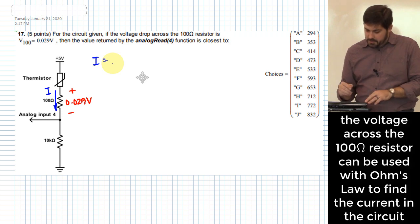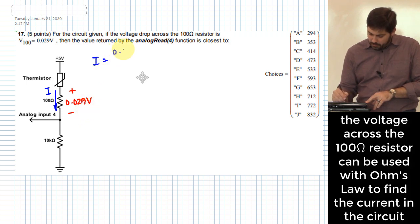So, it's based on the V and the I, right? And so we're going to take V over R, right? So we'll have 0.029 volts over 100 ohms.